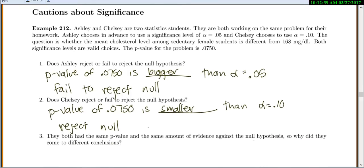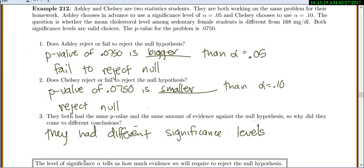So notice then that Ashley's failing to reject and Chelsea's rejecting, so they're getting different conclusions. But they both have the same p-value, and that means they have the same amount of evidence against the null. So why can they have different conclusions? Well, because they had different significance levels. And sometimes that happens. Two different researchers might choose different significance levels, and they're going to get different results.